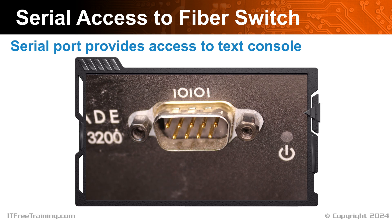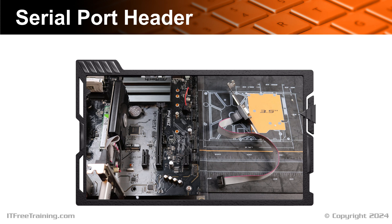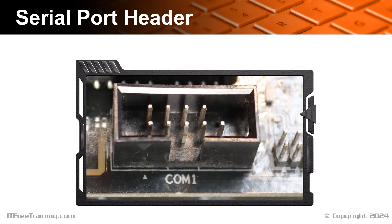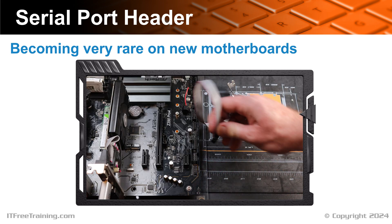The other time that an administrator will access the device using a serial port is when they can't access the device using the network, perhaps due to a network misconfiguration or a factory reset needing to be performed on the device. Let's now have a look at connecting our fiber switch to a serial port using the motherboard serial header. In this example, I will use a serial port bracket to connect to the serial port header on the motherboard. Since a serial port is often used to connect to a console, you may also hear this referred to as a console port or a COM port. Since serial ports are considered a redundant connection by today's standards, serial port headers on motherboards are becoming more and more rare. Some motherboards will have them, while others will not. It is just a simple matter of plugging it into the serial header on the motherboard.